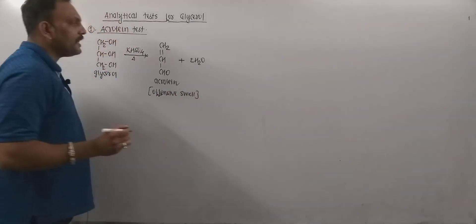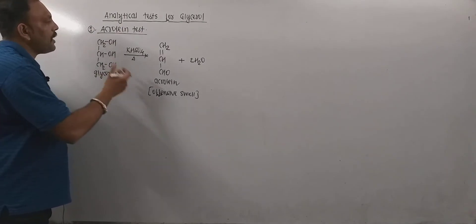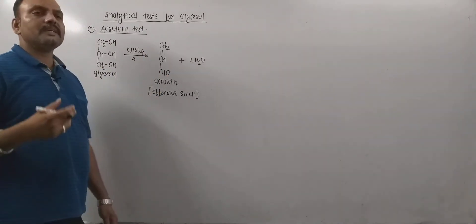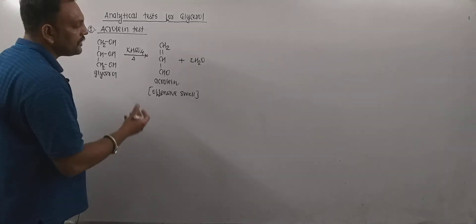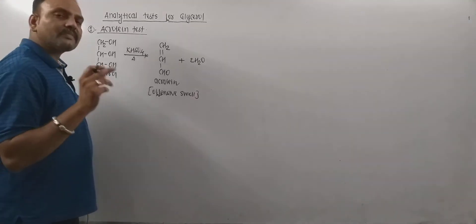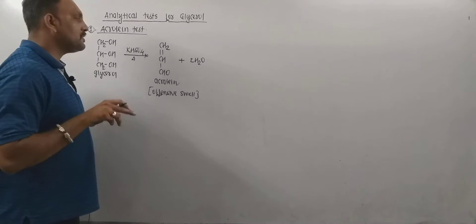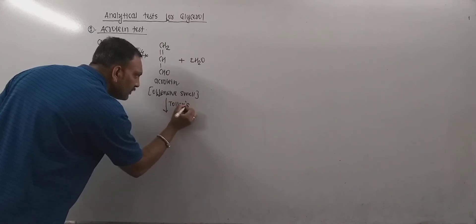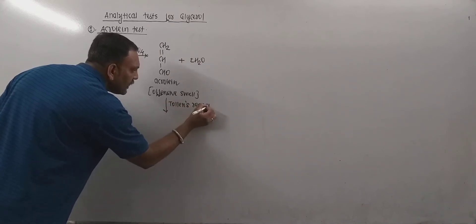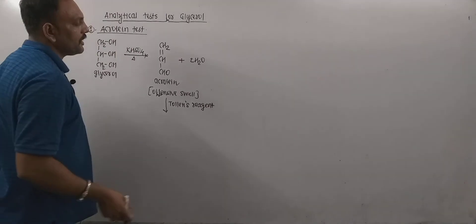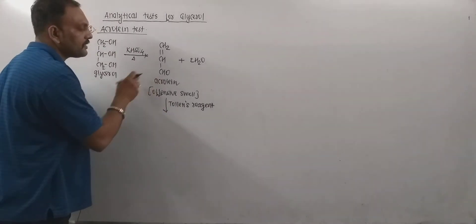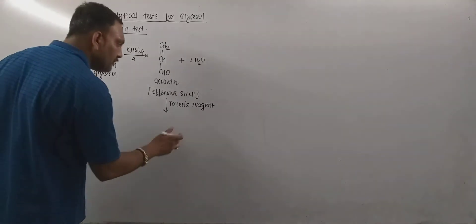Now the point is this acrolein has offensive smell. So upon dehydration, acrolein is obtained which can be smelled. The offensive smell of the product indicates that acrolein is formed. And when we test this acrolein with Tollens reagent, it has ability to reduce this Tollens reagent and that is due to the presence of aldehyde group in it.